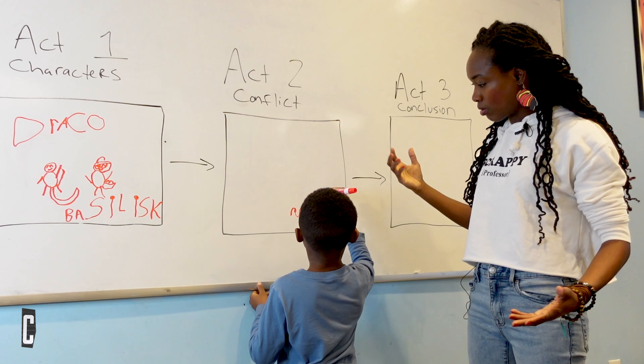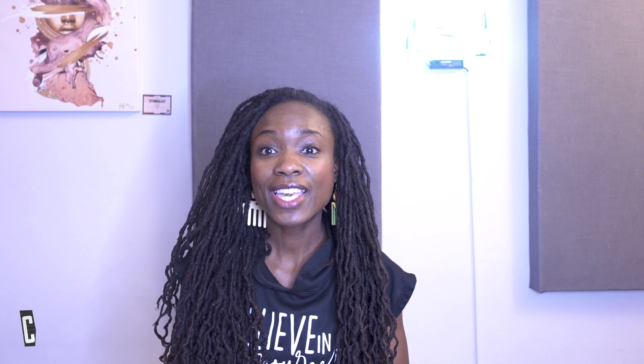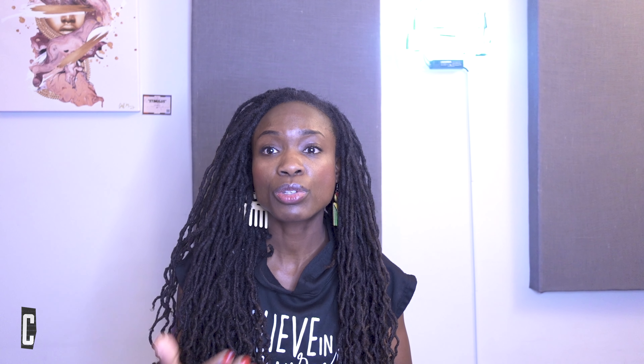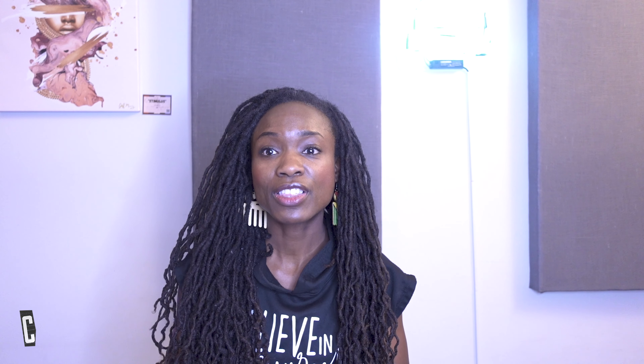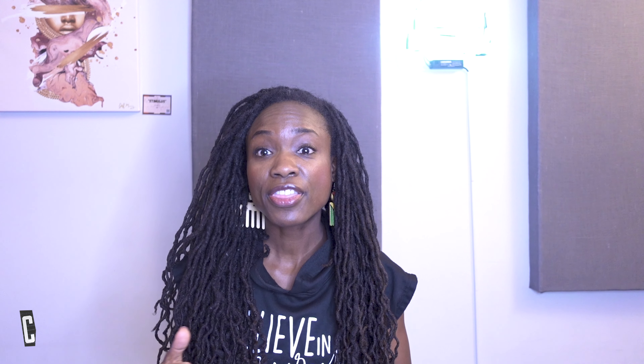In box two you want to explain to your child that every story has a problem or a conflict. Now you're in Act Two — the conflict. In your story, what's the problem going to be for the lizard? It's a lizard, he can't fit in. Okay, so draw a picture that shows him not fitting in, because that's the problem of our story. You want to let them tell you what the conflict is and let them be as creative as possible.